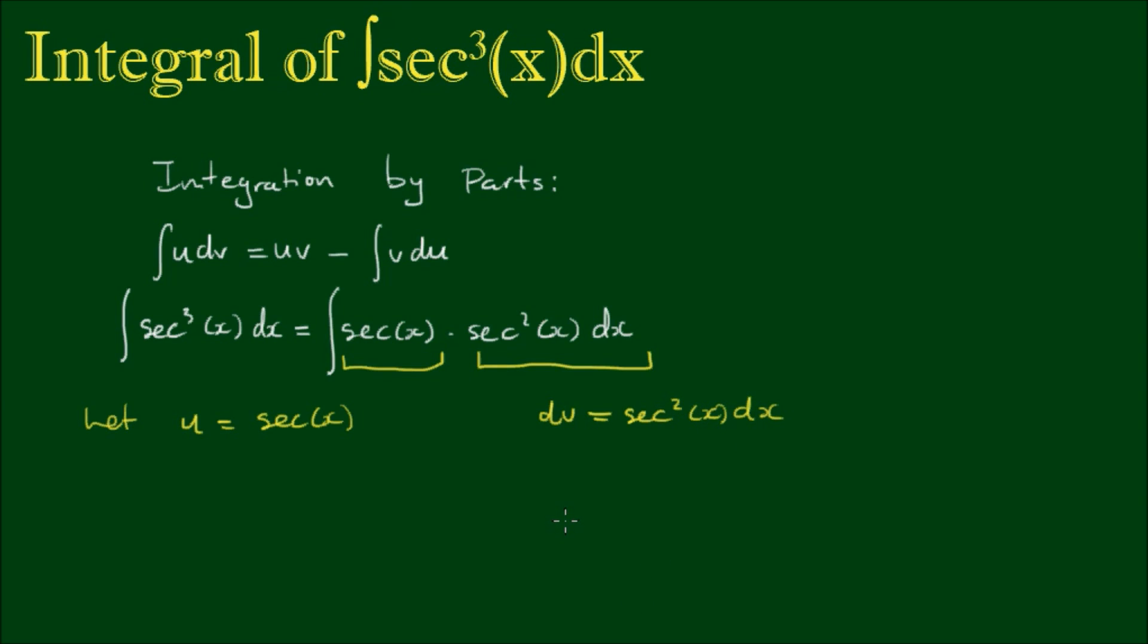So now I have the two parts for the integration by parts. If I take the derivative of u with respect to x, du is equal to sec(x) tan(x).